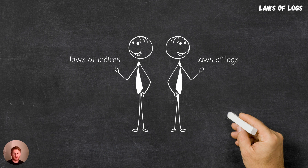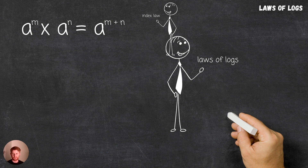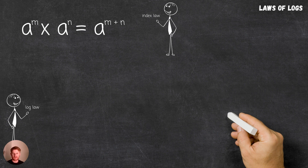Going back to the laws of indices: when we multiply two exponentials of the same base, we get the base raised to the sum of the exponents, that is m plus n. We also discussed in the previous video that we can think of logs simply as powers or exponents. Therefore, when we add two logs of the same base, we get the log of the product of the exponentials.